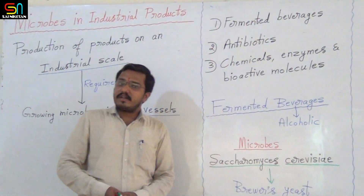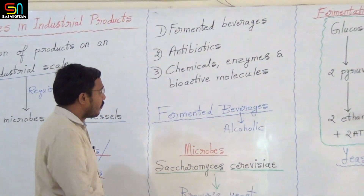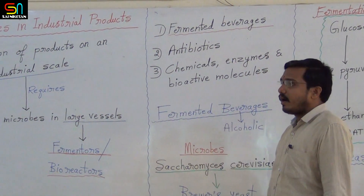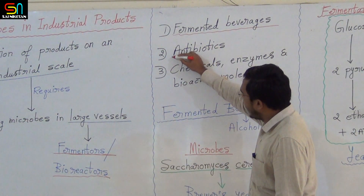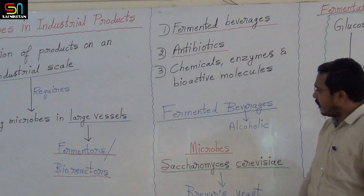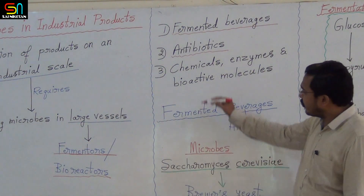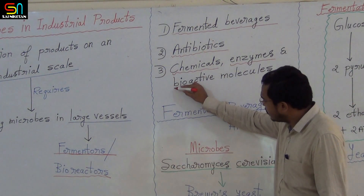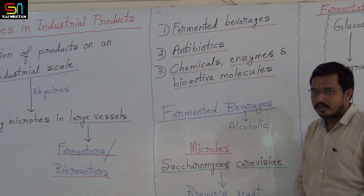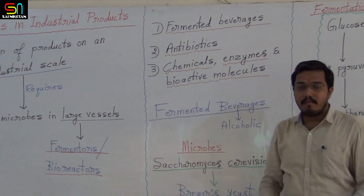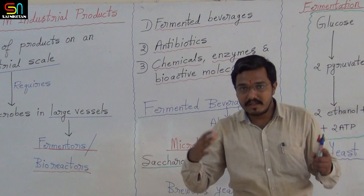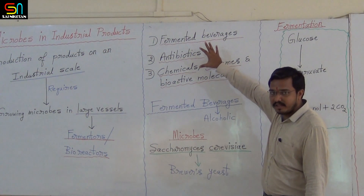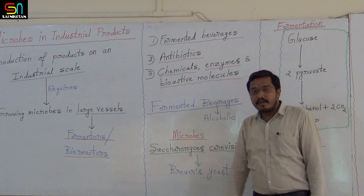In industry, microbes are used to produce fermented beverages, antibiotics, some chemicals, some enzymes, and some other bio-active molecules. To produce all these, microbes are used in industry. Without microbes, we cannot imagine these industries or the production of these industries.